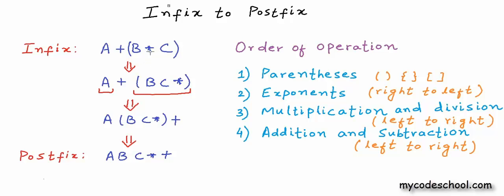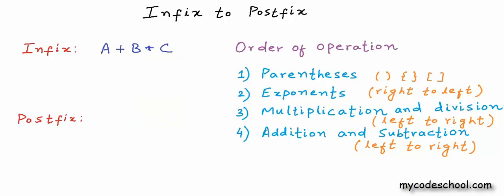In infix to postfix conversion, the positions of operands and operators may change, but the order in which operands occur from left to right will not change — the order of operators may change. In both infix and postfix forms, the order of operands from left to right is A, then B, then C, but the order of operators is different. In postfix form, operators always appear in the order in which they should be executed.